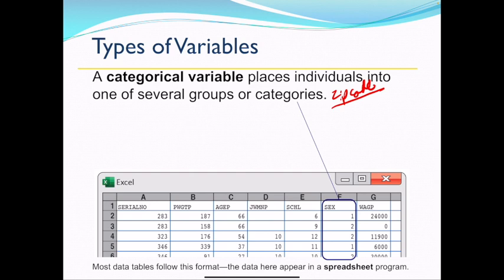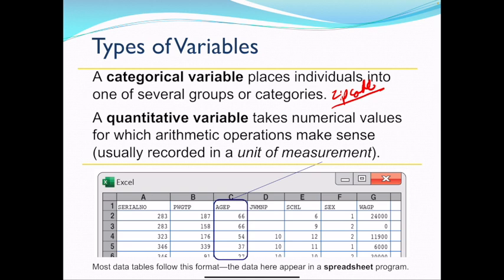So then we also have quantitative variables. Those are variables that take on numerical values and they have a unit of measurement. A zip code didn't have a unit of measurement. So for example, that could be age, height, weight. Those would all be good quantitative variables and they all have a unit of measurement.